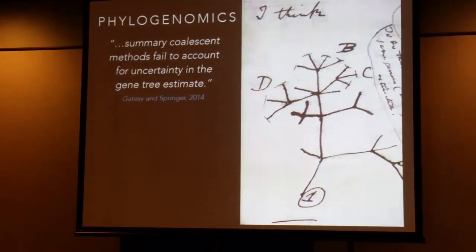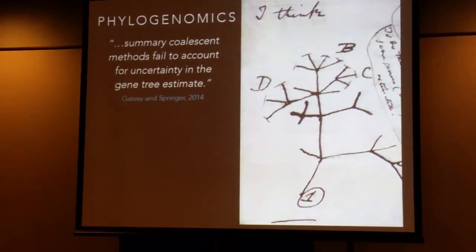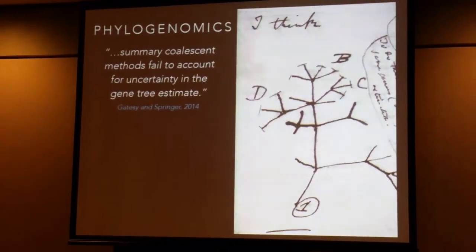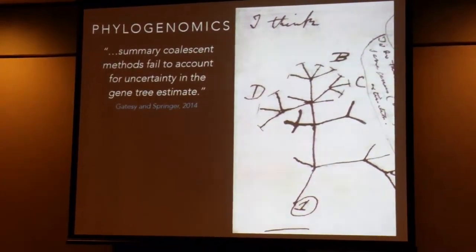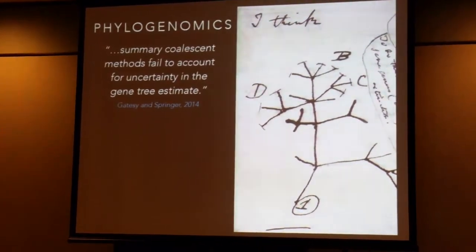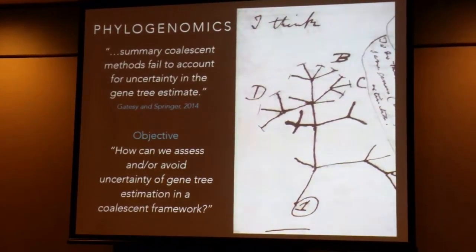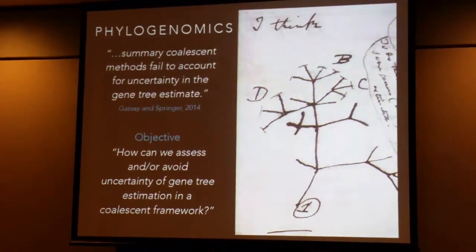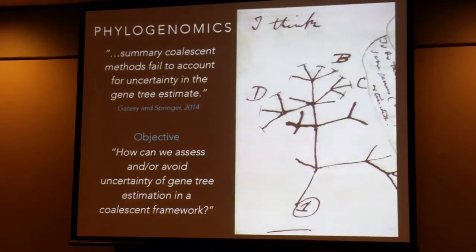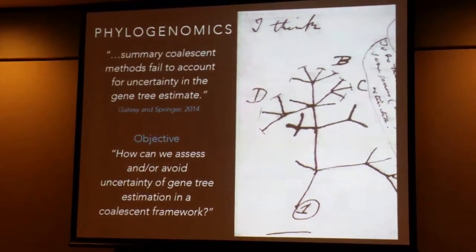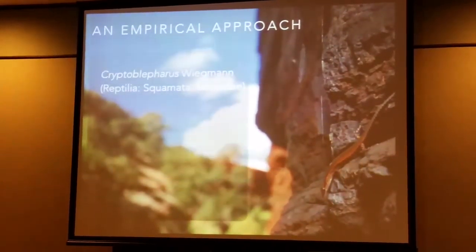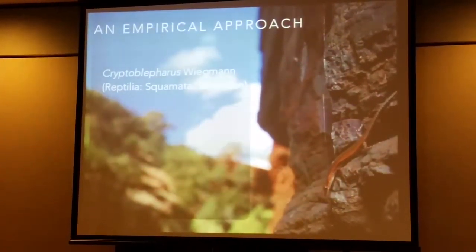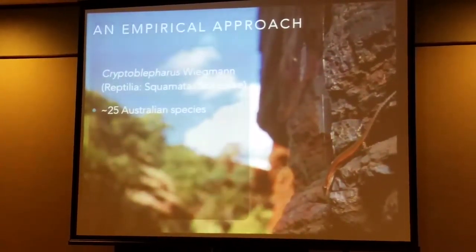There have been a few articles criticizing summary coalescent methods, mainly for the reason that they don't account for uncertainty in the gene tree estimate. These authors actually favor the concatenation method for these reasons. However, I don't think that we should go back to the concatenation method — we should actually try to, with those large datasets, characterize some of these issues. The main objective is to question how we can assess or avoid uncertainty in those gene tree estimates in a coalescent framework.